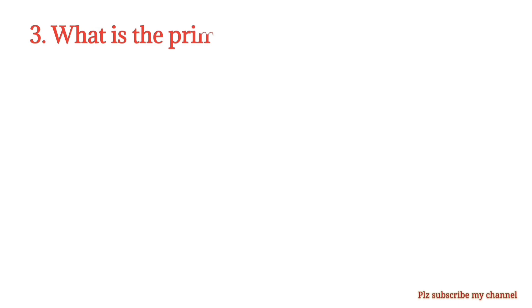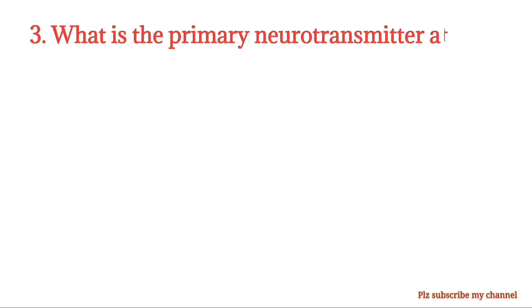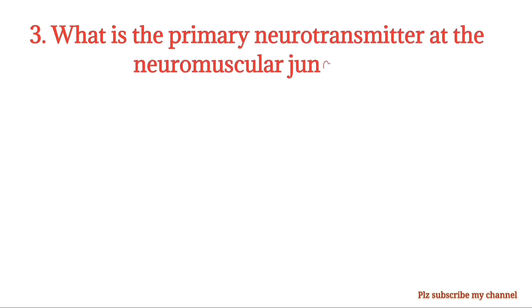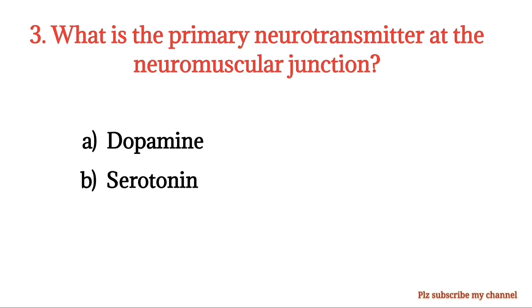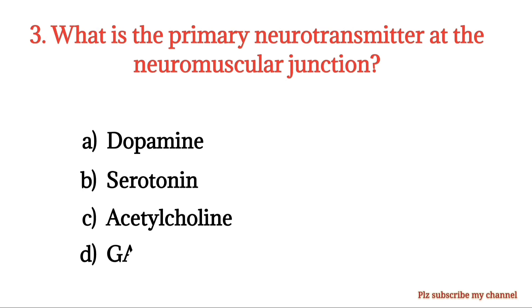MCQ number 3. What is the primary neurotransmitter at the neuromuscular junction? Option A: Dopamine. Option B: Serotonin. Option C: Acetylcholine. Option D: GABA. The right option is Option C.